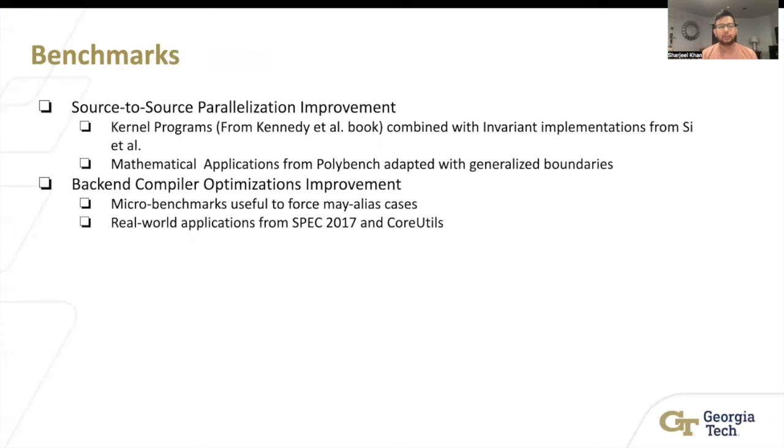The benchmark we use for this is that for the dependencies one, we use kernel programs, small micro benchmarks of loops from this Kennedy book, and from this paper on ZOOGC. We also took some medical applications of polybench, and that's going to do with generalized boundaries. For the backing for the alias analysis, we took micro benchmarks which we created, which would force many cases, so we can pick them and see what happens. And then we took real-world applications of spec and core, and ran our pass to see what happened also.